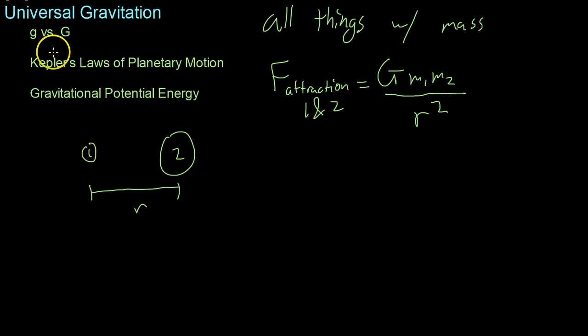And it should be noted that G has a very specific value. G is 6.67 times 10 to the negative 11 and then to make it consistent so that it's a force, it has the units newtons meters squared per kilogram squared. Now that just gives us the magnitude mutually felt by these two objects.